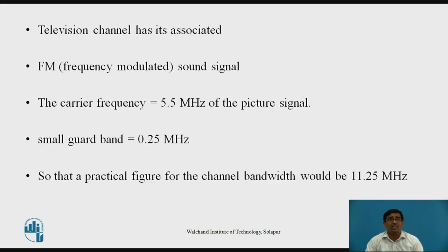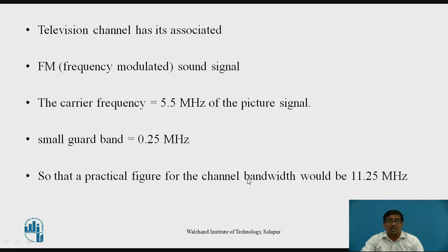Each television channel is also associated with a frequency-modulated signal that carries the sound signal. The sound carrier frequency requires 5.5 MHz offset from the picture signal. A small guard band of 0.25 MHz is also required. Therefore, the total practical channel bandwidth is 11.25 MHz: 5.5 MHz for the upper sideband plus 5.5 MHz for the lower sideband equals 11 MHz, plus 0.25 MHz guard band.